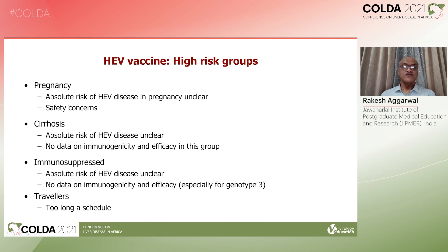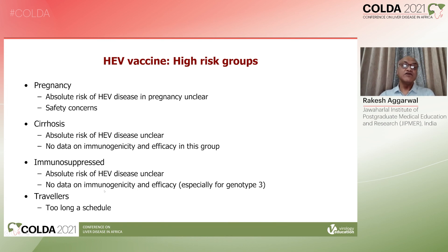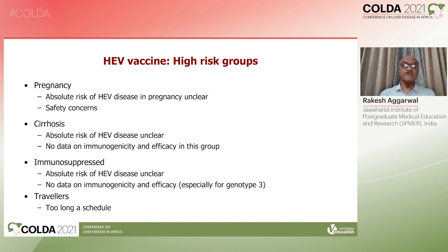However, there are some concerns. This vaccine has not been studied well in pregnancy and there is obviously a safety concern. Secondly, the absolute risk of hepatitis E virus disease during pregnancy is unclear. For persons with chronic liver disease, the main concern is that we do not know whether three doses of vaccine will be sufficiently immunogenic or whether antibodies would persist and prevent infection. For the immunosuppressed group, which is associated with genotypes 3 and 4, we have very little data on whether the vaccine will induce protective antibodies in them. Furthermore, the vaccine is developed from genotype 1 virus, so it is uncertain whether it will prevent disease caused by genotype 3 and 4 infection.